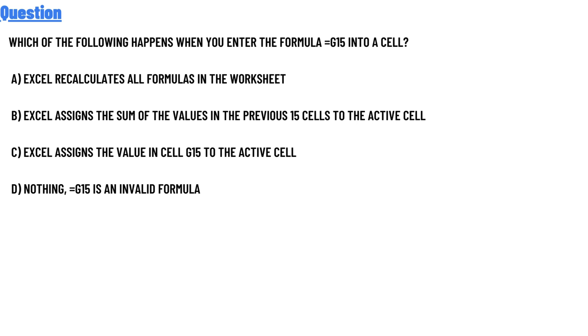Option A: Excel recalculates all formulas in the worksheet. Option B: Excel assigns the sum of the values in the previous 15 cells to the active cell.